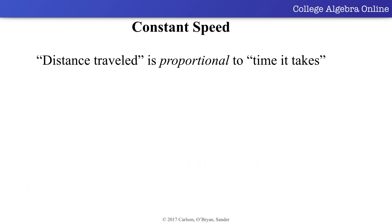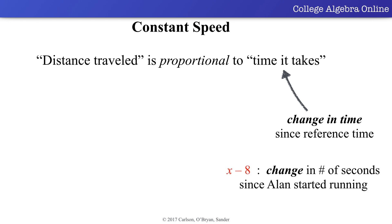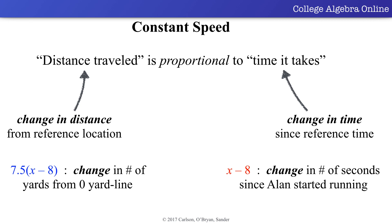When talking about a constant speed, we know that distance traveled is proportional to the time it takes to travel that distance. However, we hope you notice that time it takes is really a change in time since a reference time. In the previous scenario, x minus 8 represented a change in the number of seconds since Allen started running. Similarly, distance traveled is really a change in distance from a reference location. In the previous scenario, 7.5 times x minus 8 represented Allen's change in distance from the 0 yard line.